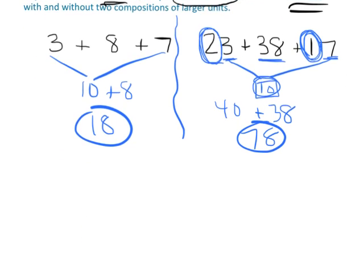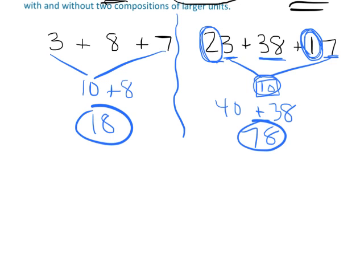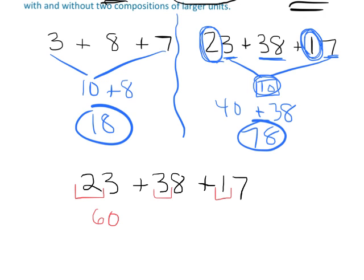Now there's another way students might have done that problem. They might have taken, let's see, I'll write it down here. 23 plus 38 plus 17. They can do it in multiple steps. They can first add all the 10s. So 20 plus 30 plus 10. So they could add all those together. That equals 60.